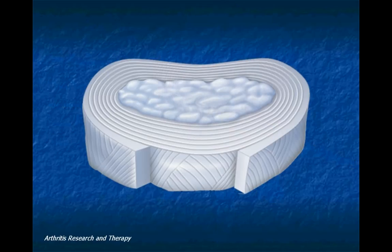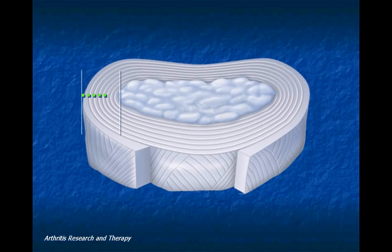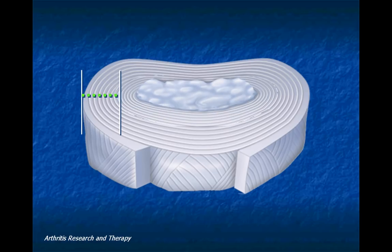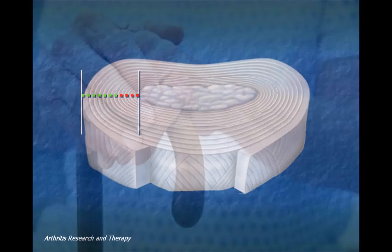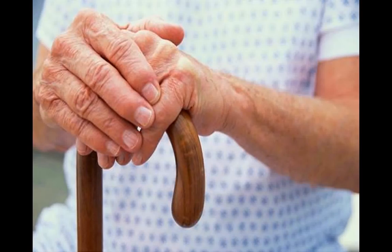According to an article in Arthritis Research and Therapy, as the body ages, the boundary between the two parts of the disc becomes less obvious, and with increasing age, the nucleus or center of the disc generally becomes more stiff and fibrotic and less gel-like. The loss of this gel-like structure in a disc has a major effect on the disc's load-bearing ability.